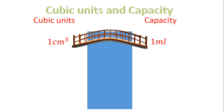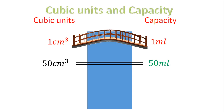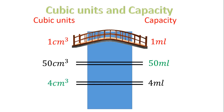Let's look at the first bridge. If I have one centimeter cubed, that's equal to one milliliter. In other words, if I have 50 centimeters cubed, that will give me 50 milliliters. And from capacity, if I have four milliliters, that will give me four centimeters cubed. The one is just equal to the other, except for your units.